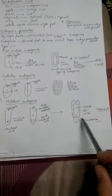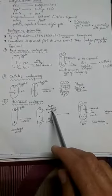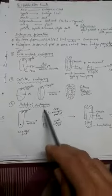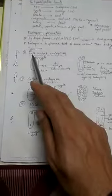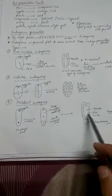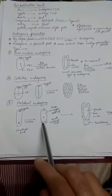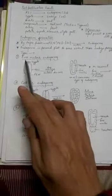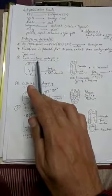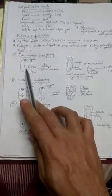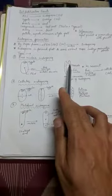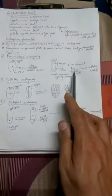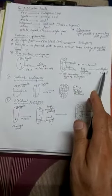Haustorium is a structure which increases the surface area to absorb more nutrition, so it does not play a very significant role otherwise. The main thing is that the large micropylar cell undergoes a large number of free nuclear divisions, making it appear like free nuclear endosperm. The difference is that its first division is cellular, and all final divisions are only karyokinesis with no cytokinesis.